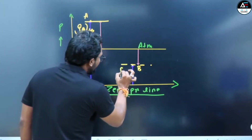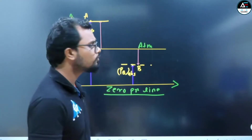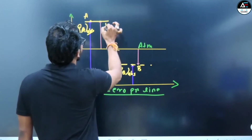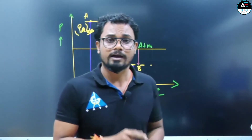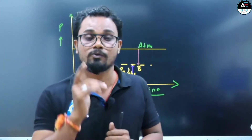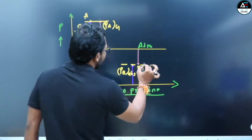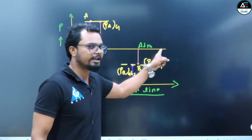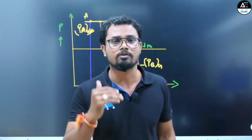Similarly, if you measure from the atmospheric pressure line, that is called gauge pressure — P_A gauge and P_B gauge. All instruments measure gauge pressure. The reference point for gauge pressure is the atmospheric pressure line. Now, vacuum pressure is the pressure below the atmospheric pressure line — that is called vacuum pressure.